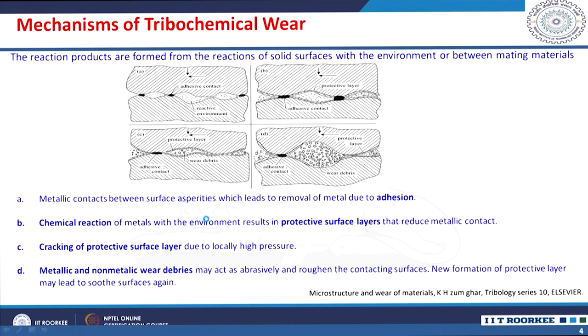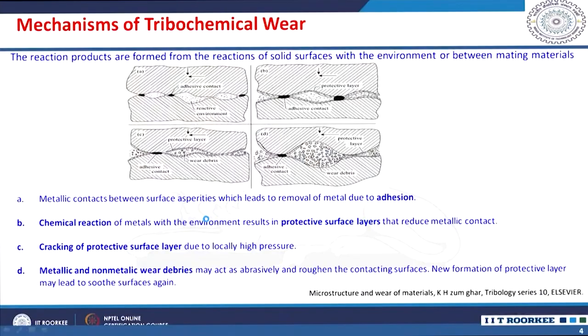We need to understand the micromechanisms involved in such material removal. The material removal is a synergetic effect of the rubbing action as well as the chemistry or chemical reaction products. Reaction products are formed from the reactions of solid surfaces with the environment or between the mating materials. For a metallic material system, there are metallic contacts between the surface asperities that lead to material removal mainly because of adhesion. The chemical reaction of metals with the environment results in protective surface layers that reduce the metallic contact.